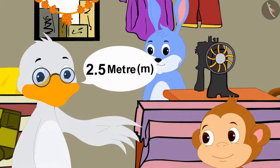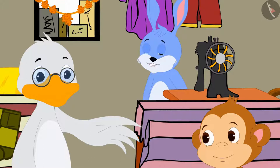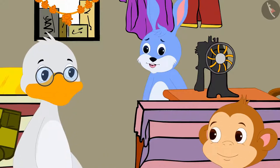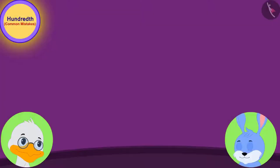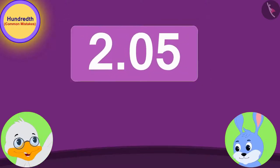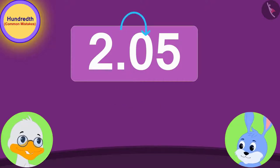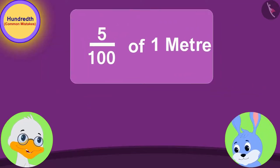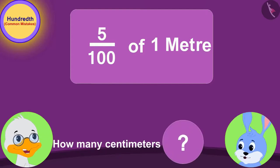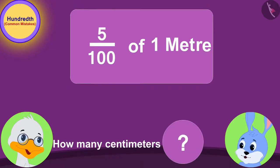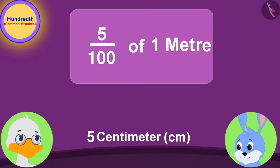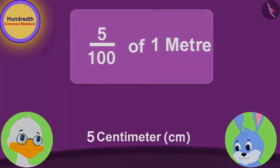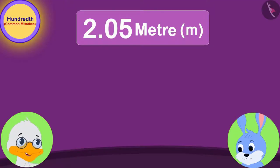Uncle asked Bunny about this. Bunny said, 'But uncle, 2.05 meters is equal to 2.5 meters, right?' Uncle replied, 'Look Bunny dear, in 2.05 meters, the decimal point is followed by 0.5, or 5 hundredths of a meter. And how many centimeters of a meter is equal to 5 hundredths?' '5 centimeters,' Bunny quickly replied. 'Exactly.'